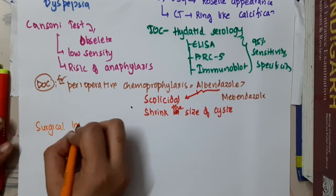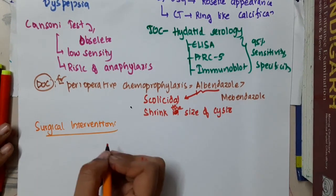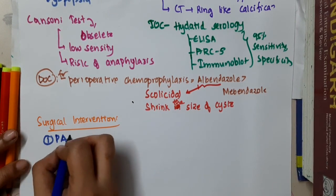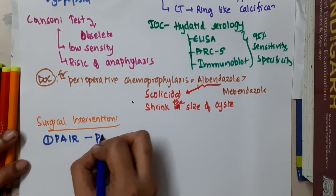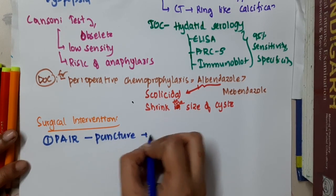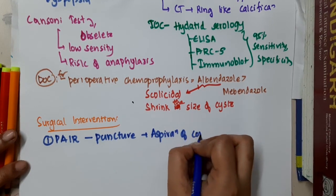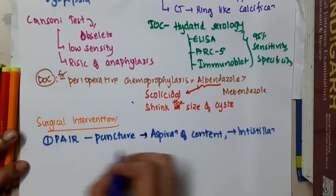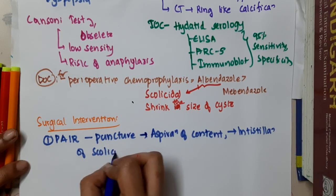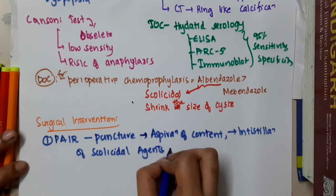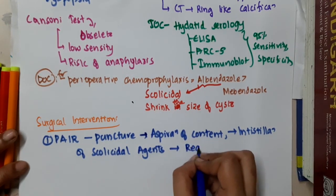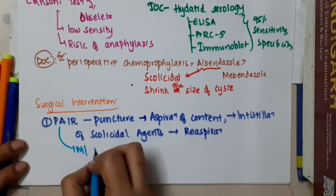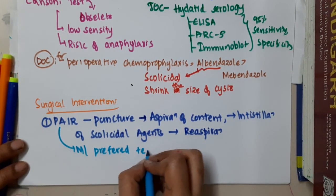For surgical intervention, the most preferred technique is PAIR — Puncture, Aspiration, Instillation of scolicidal agents, and Re-aspiration. You puncture the cyst, aspirate its contents, instill scolicidal agents to kill Echinococcus granulosus, and then re-aspirate.